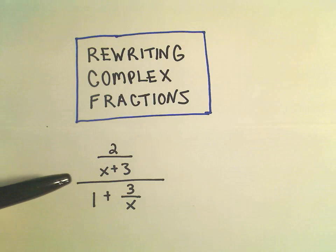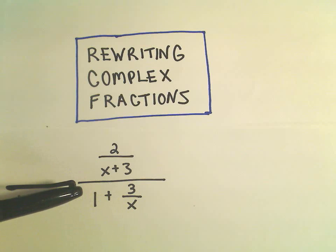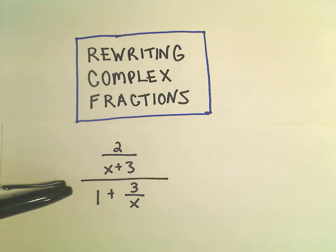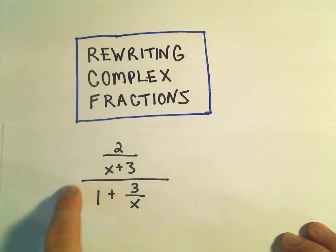So again, two ways to do them. One way is to look at all the denominators, and you can multiply the top and bottom by the least common multiple of the denominators. And the idea is that'll get rid of everything except for the one big fraction.